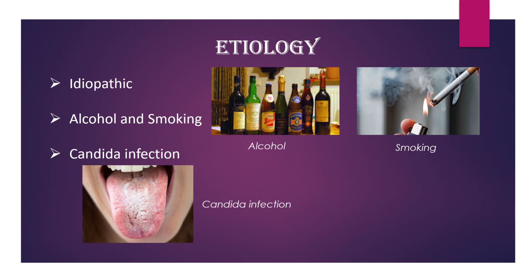Now let's learn about its etiology. The causative factors of erythroplakia are idiopathic, alcohol, smoking, and candida infection. In most cases, the cause for erythroplakia is not found. Alcohol and smoking can act as predisposing factors. A secondary infection or superinfection with candidiasis may be associated with dysplastic oral mucosal cells.